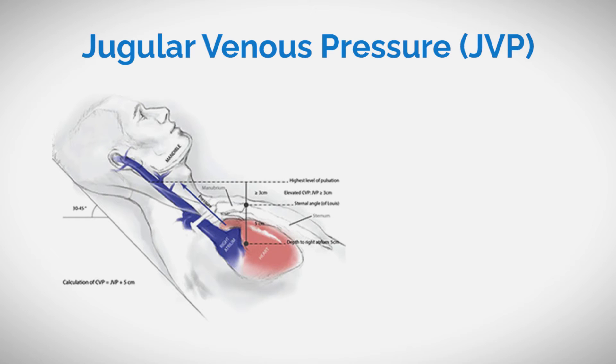In clinical practice, the jugular venous pressure, JVP, is a crucial indicator of a patient's fluid status and is pivotal for accurate fluid management.